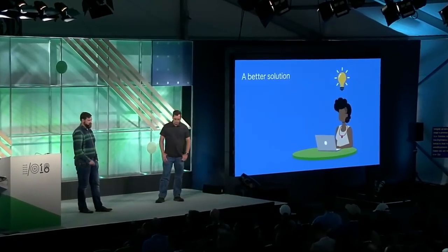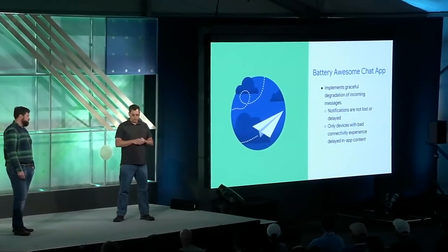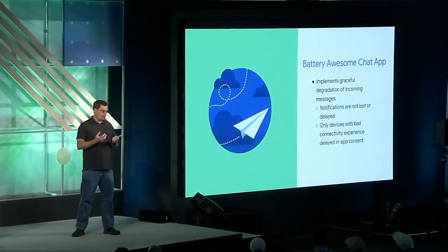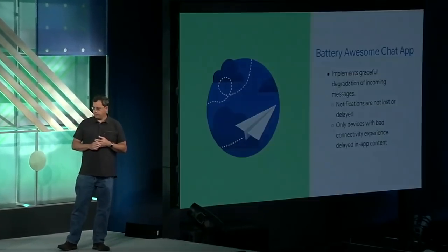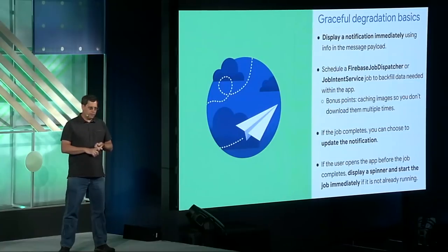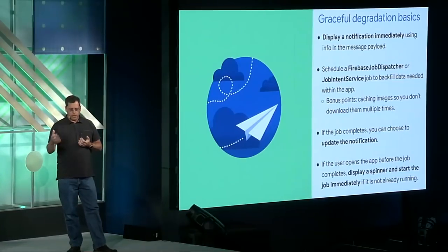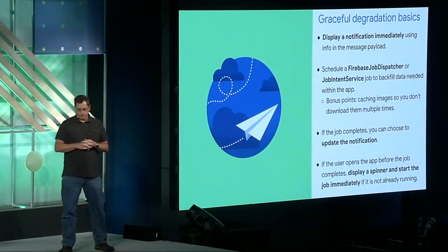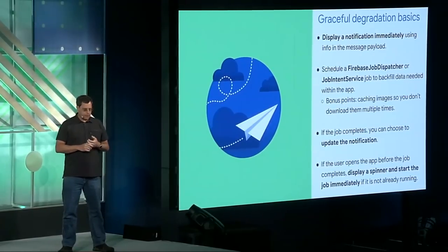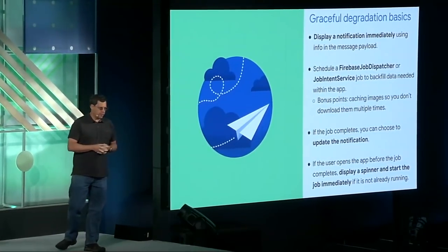We need a better solution. We'll re-implement the app to implement graceful degradation — meaning we'll always display the notification, even if we can't get the content from the servers. The steps of graceful degradation are: first, display a notification immediately — you can often use the payload of an FCM message to display the content. If that's not sufficient, display a placeholder, then schedule a job to collect the information in the background. If that job completes, you can update the notification if appropriate. If the user opens the app before the job completes, display a spinner and start the job immediately. If done right, very few users will notice this difference, and those on poor quality networks will appreciate the extra battery savings.